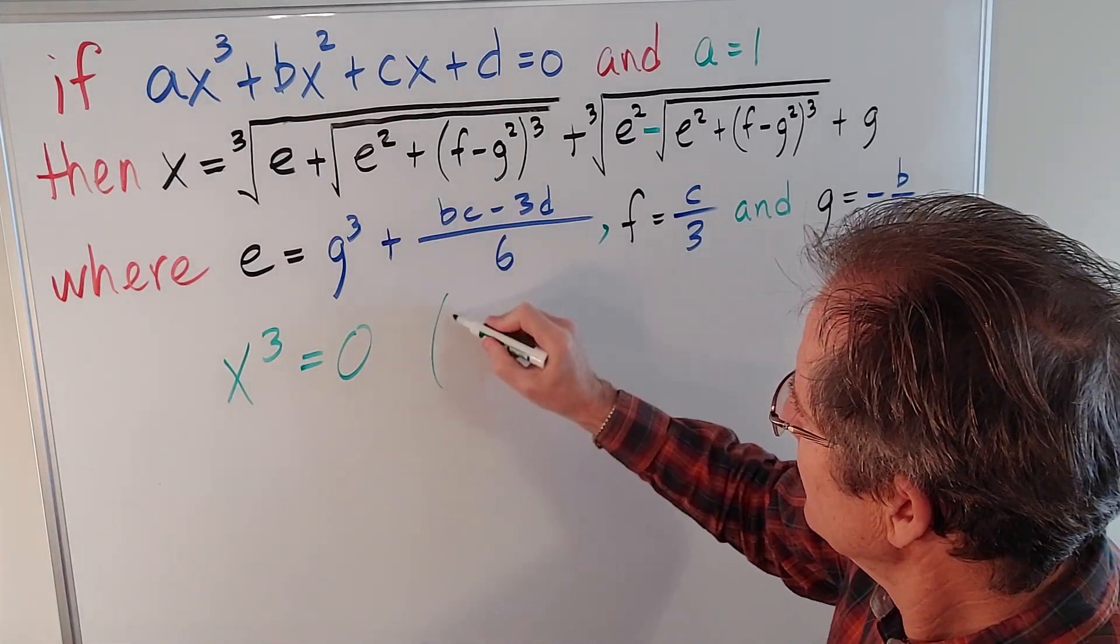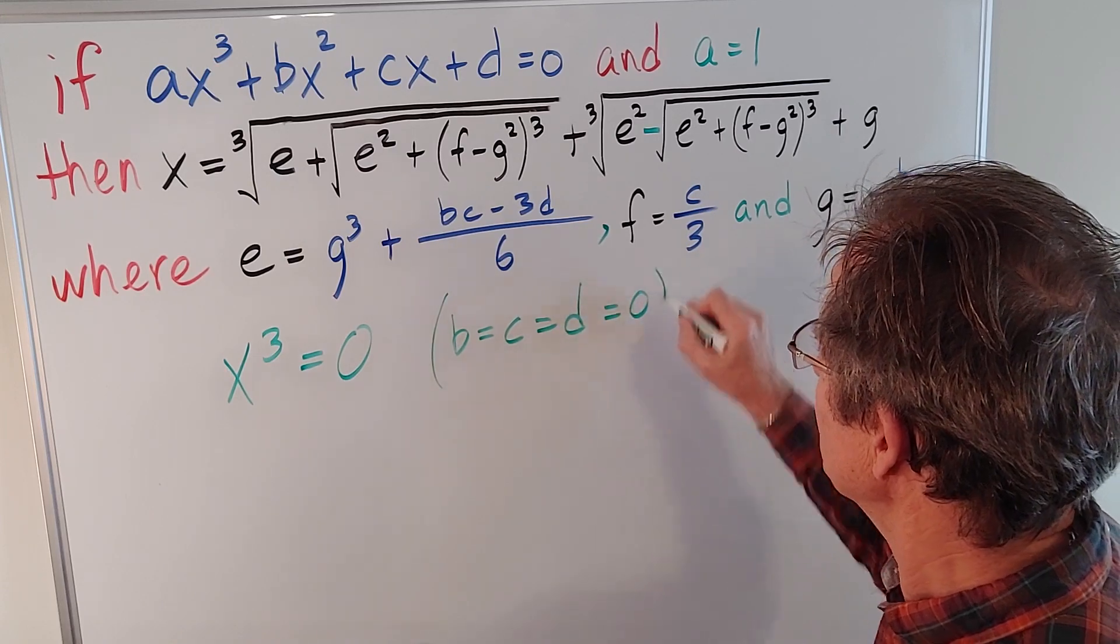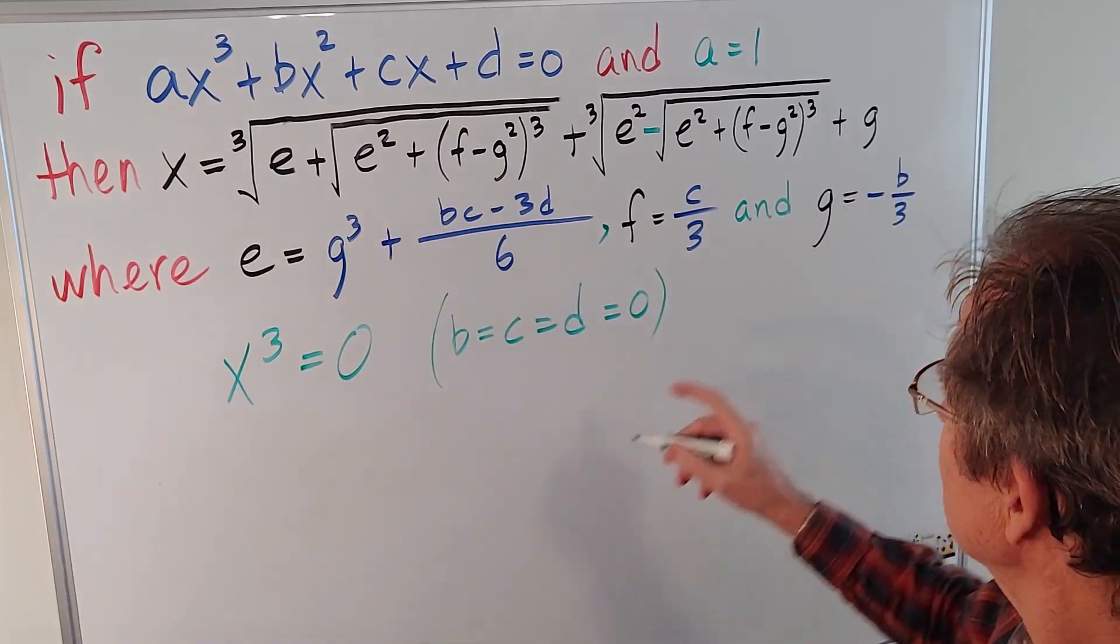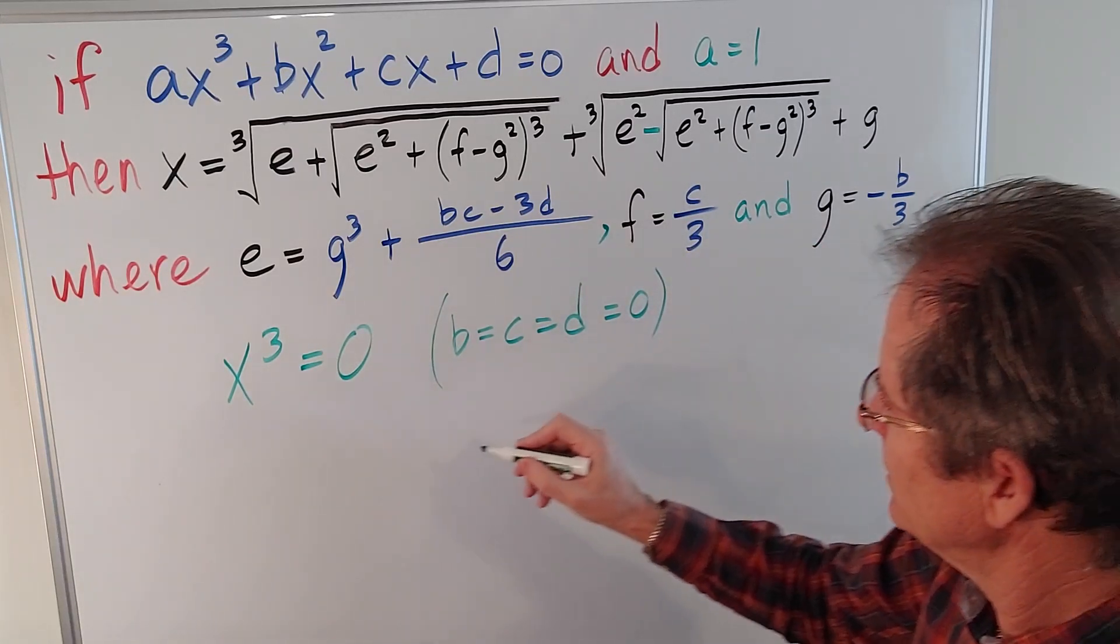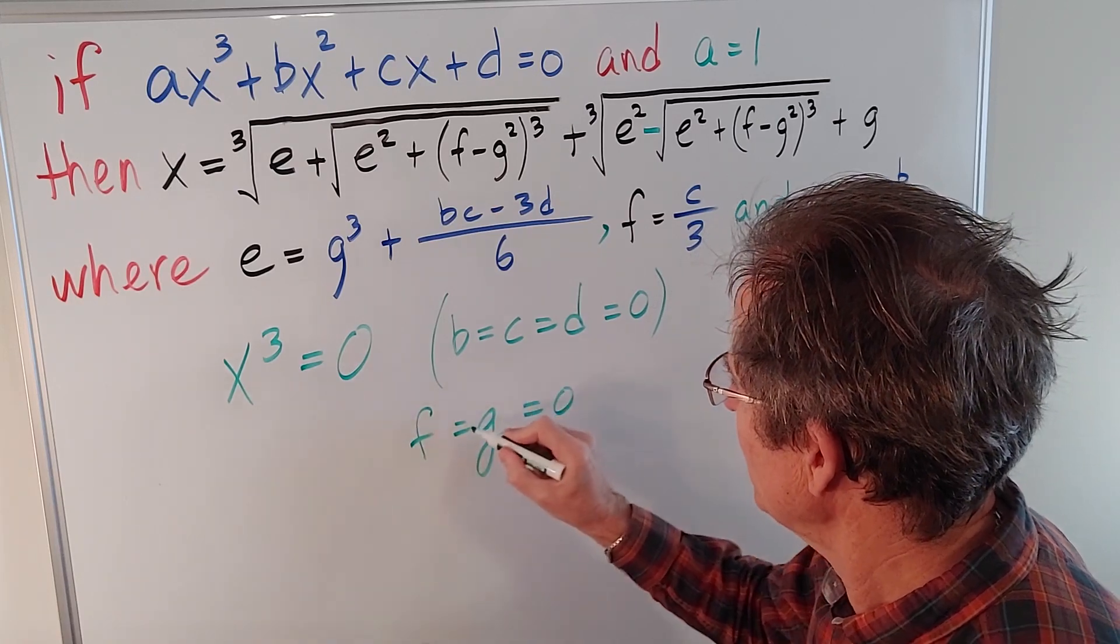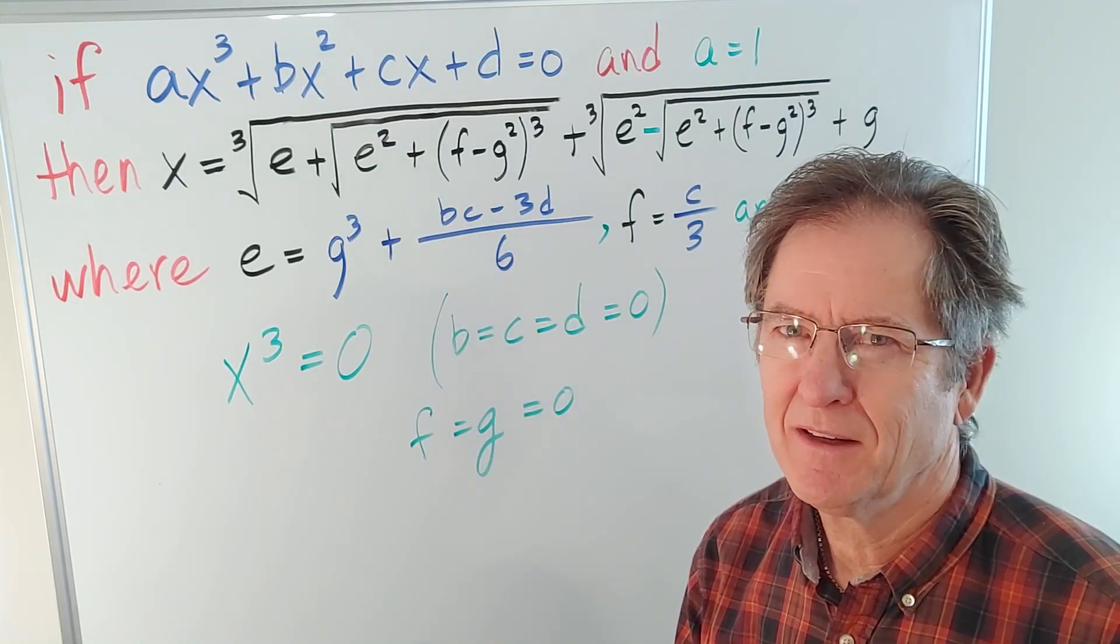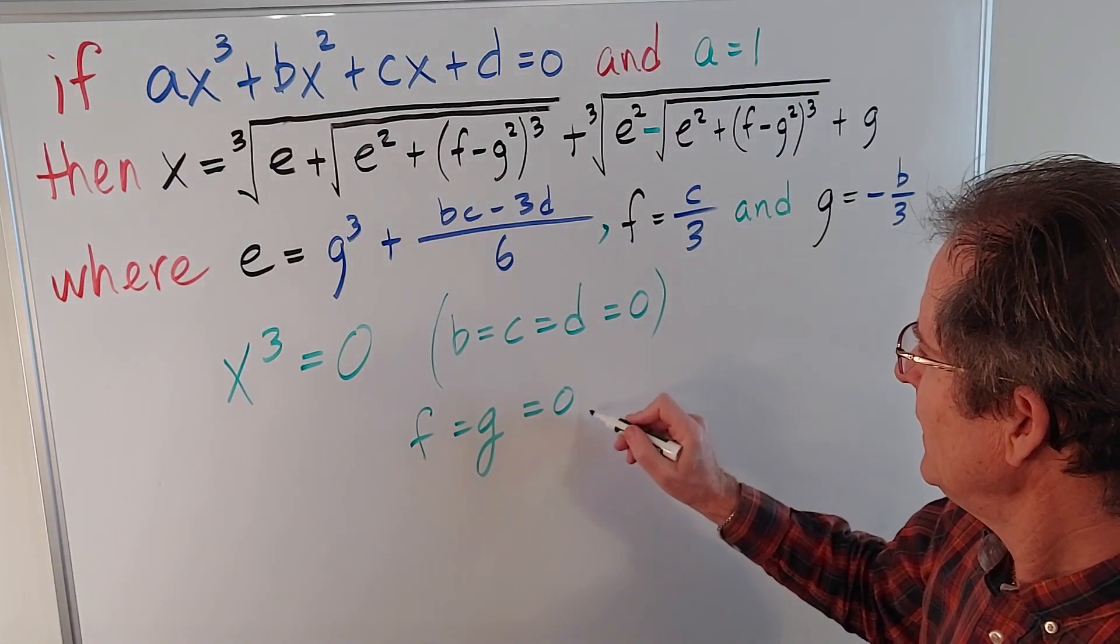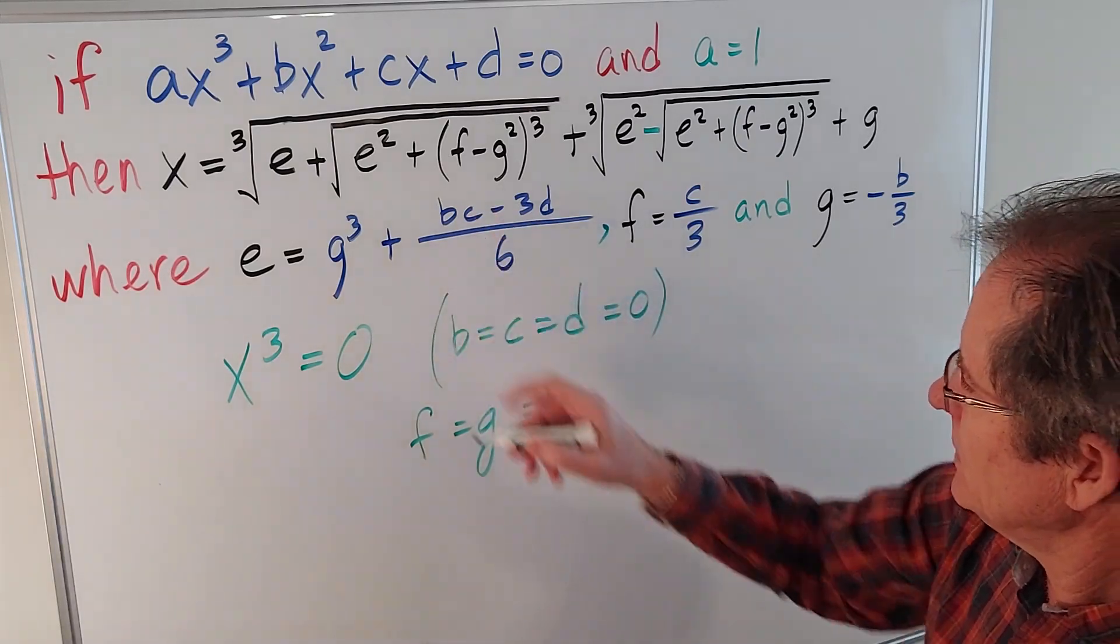So this tells me that b and c and d are all 0. If that's the case, then we can see g is going to be 0, and f is going to be 0. So f and g are 0. By the way, when I say f and g, I'm not swearing. It sounds like I'm swearing, but I'm not.